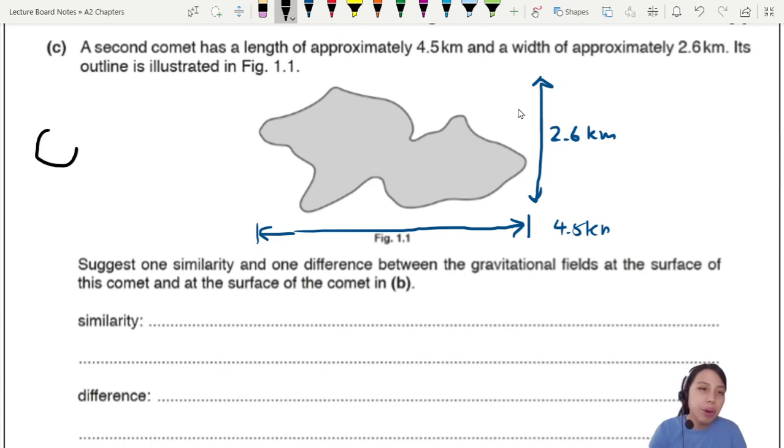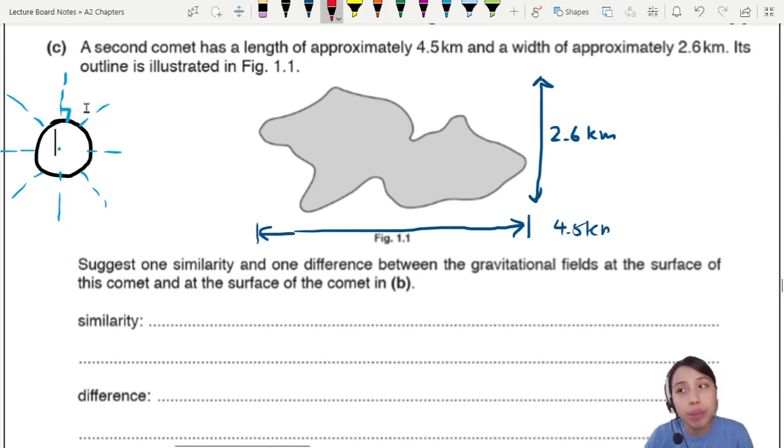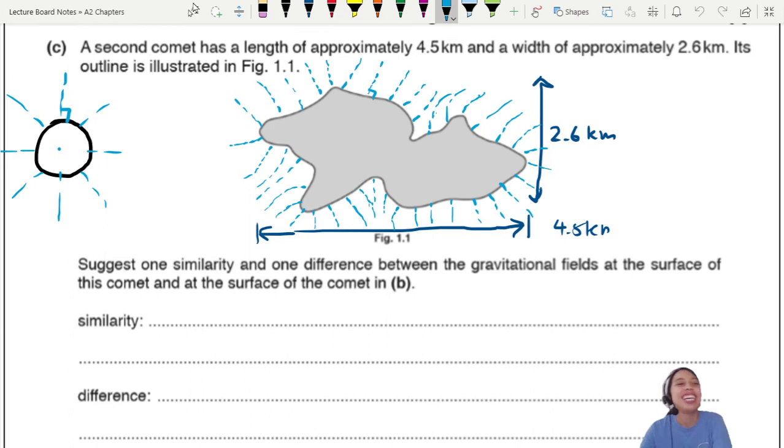Suggest one similarity and one difference between the gravitational fields at the surface of this comet and the comet in B. Previously in B our comet is a nice sphere with a radial gravitational field - radial means like radius, it goes out from the center outwards. What about this comet's field? Whatever you draw, that line must be perpendicular to the surface. You see the sphere, I drew perpendicular signs. You gotta do the same thing for this comet. The lines cannot cross each other. Now you get the idea.